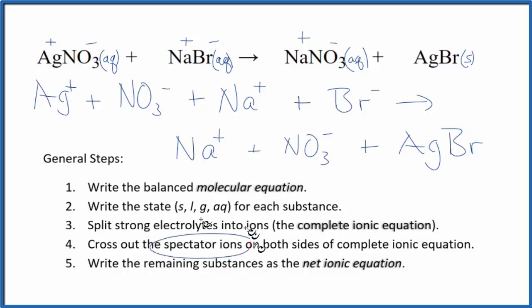Next, we can cross out spectator ions. They're on both sides of our complete or ionic equation. They haven't changed, so we're not interested in them. For example, in the reactants, we have a nitrate ion. We have one in the products. Cross them out. We have a sodium ion here in the reactants, and the same thing in the products. It hasn't changed. We cross it out.